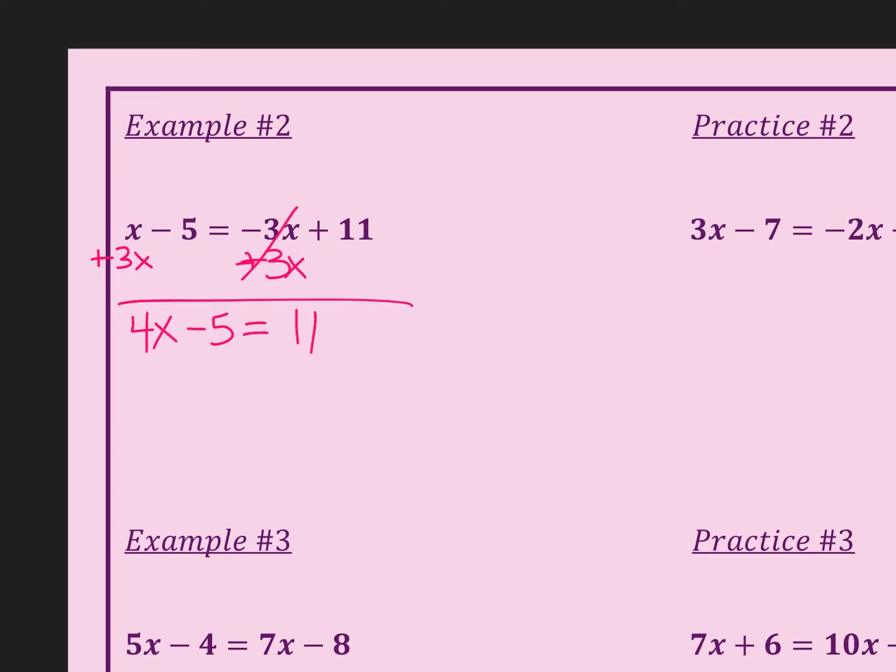Now we want to move that -5. We want to move the constants. I want to get rid of it over here. In order to eliminate it, I'm going to add 5 to both sides. Because whatever I do to one side, I must do to the other.